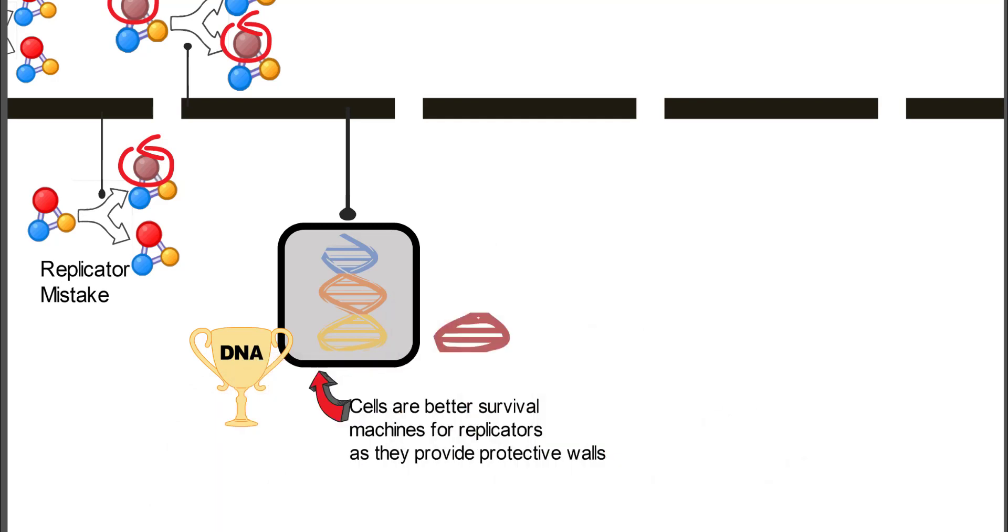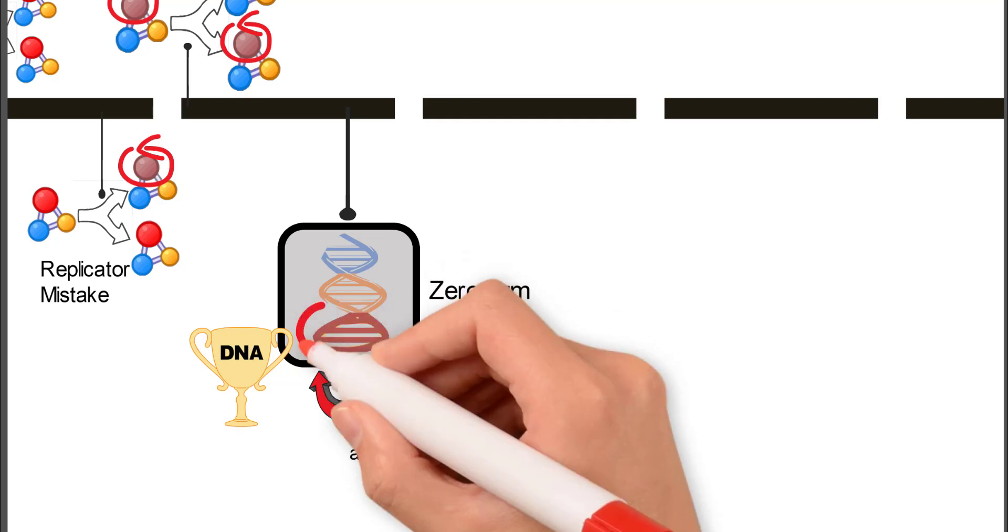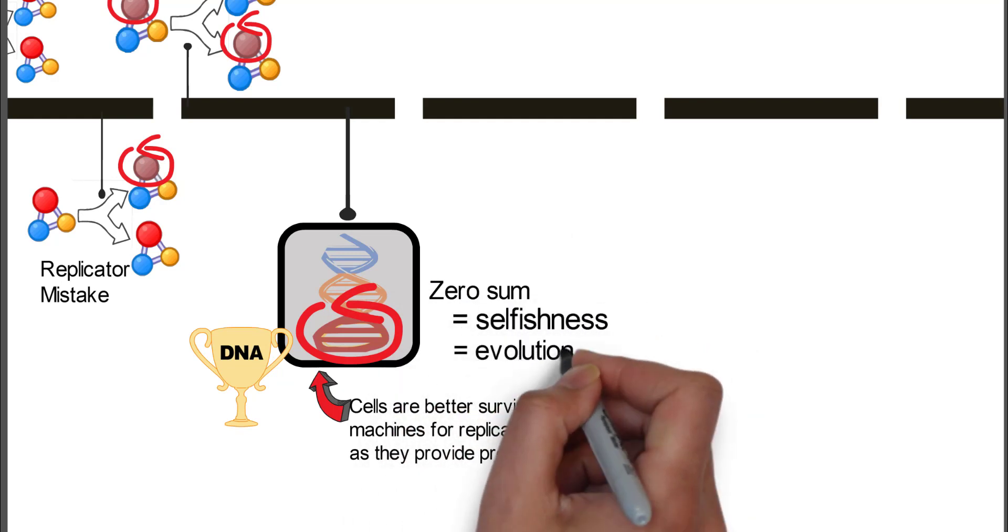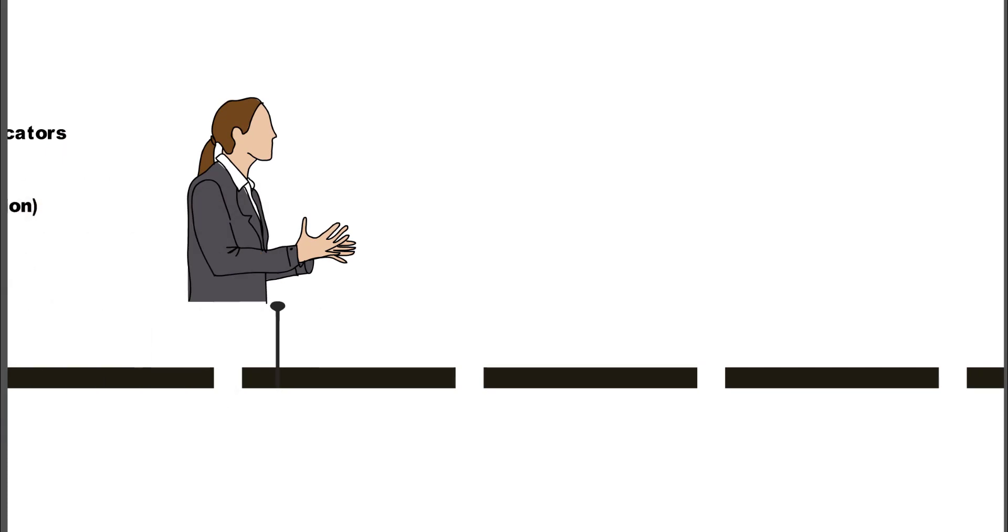Basically, though, the DNA is all about these alleles that are in competition with each other. That's the mutations inside the DNA, and it's a zero-sum game. That's why he calls it selfishness, because only one can win. So there's an evolution, and that one basically is one that becomes our evolutionary preference.